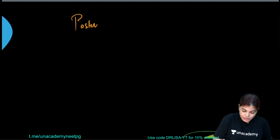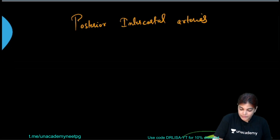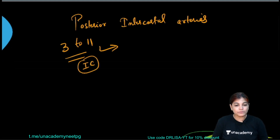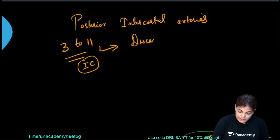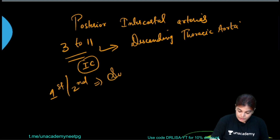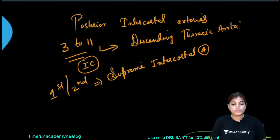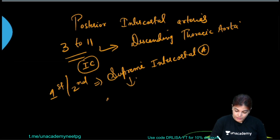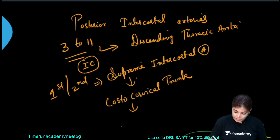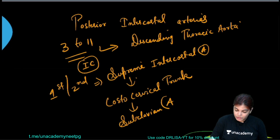The posterior intercostal arteries from the 3rd to 11th intercostal space are branches of the descending thoracic aorta. The 1st and 2nd posterior intercostal arteries are branches of the supreme intercostal artery, also called the superior intercostal artery, which is a branch of the costocervical trunk. The costocervical trunk itself is a branch of the subclavian artery.